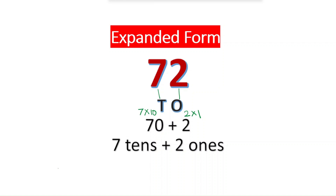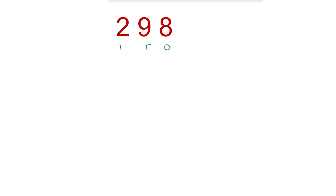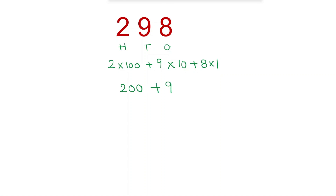Another way we can write it is 7 tens plus 2 ones. For 298: 8 is in the 1's place, 9 is in the 10's place, and 2 is in the 100's place. So we can write it as 2 into 100 plus 9 into 10 plus 8 into 1, which equals 200 plus 90 plus 8.